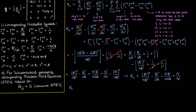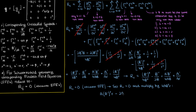Just like before, this Ricci tensor component has to satisfy the vacuum Einstein field equations, so R₁₁ must equal zero. Setting it to zero and multiplying both sides by the common denominator 4ab²r gives us the following equation corresponding to the R₁₁ component. I'll call this equation one.